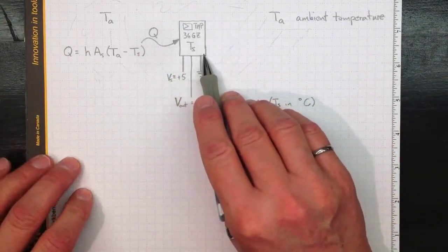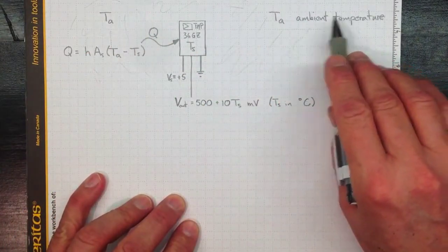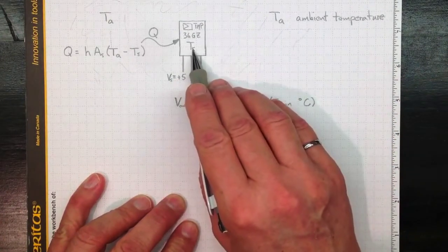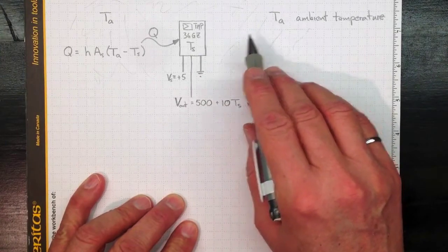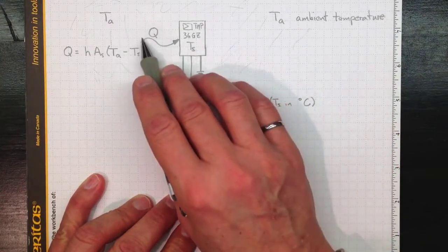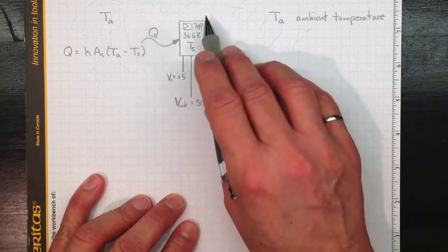Here's our TMP36. It's in an environment at an ambient temperature T sub A, but it hasn't reached that temperature yet. Its temperature is T sub S, so something different from T sub A. If T ambient is bigger than TS, then there's going to be heat transfer into our little package TMP36.